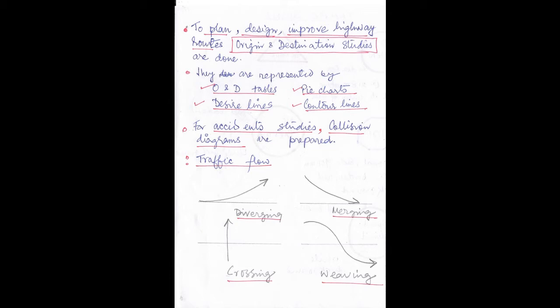They are represented by O and D tables, that is origin and destination tables, pie charts, desire lines, and contour lines.